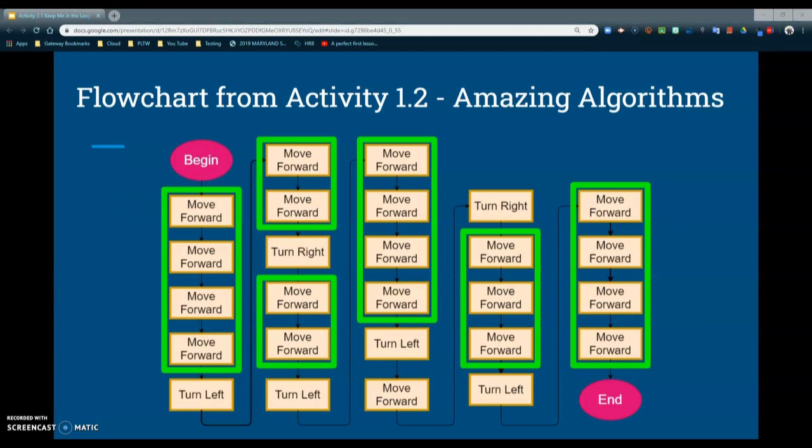An abstraction is the process of reducing complexity by hiding unnecessary details to make it easier to think about a problem. A procedure is a set of code that performs an action and is considered a type of abstraction. We're going to look at how to create these procedures and abstractions and place them into what we call a for loop.